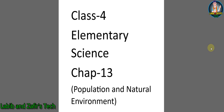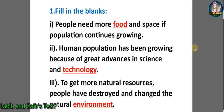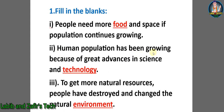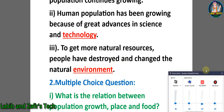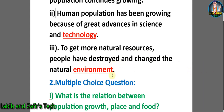The things we are going to discuss today are short questions, descriptive questions, filling the blanks, etc. For filling the blanks: number one, people need more food and space if population continues growing. Number two, human population has been growing because of great advances in science and technology. Number three, to get more natural resources people have destroyed and changed the natural environment.